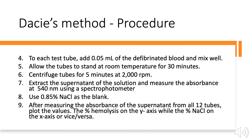After standing, centrifuge the tubes for at least 5 minutes at 2000 rpm. Extract the supernatant and measure the absorbance at 540 nanometers using a spectrophotometer. You can use the 0.85% sodium chloride tube without blood as your blank. After measuring the absorbance of all supernatants from all 12 tubes, plot the values with percentage hemolysis on the y-axis and percentage NaCl concentration on the x-axis, or vice versa.